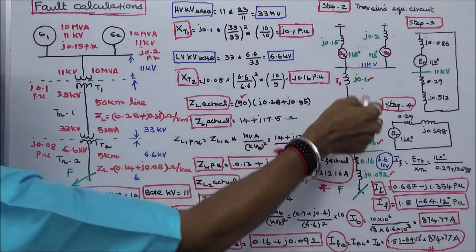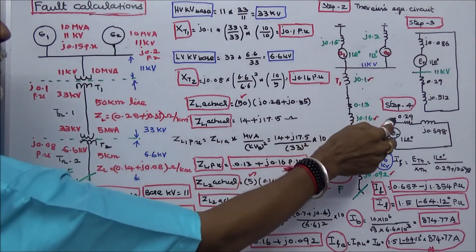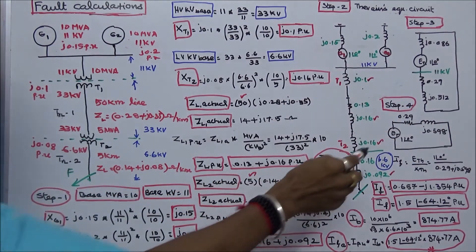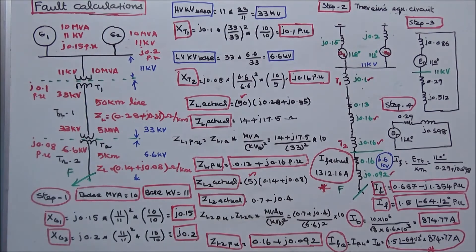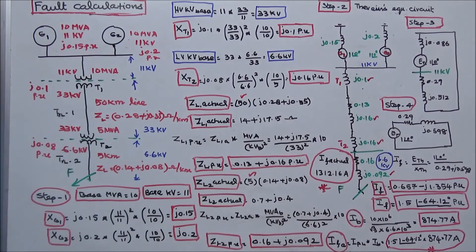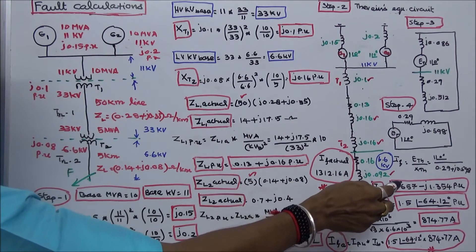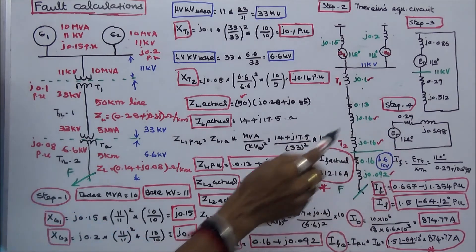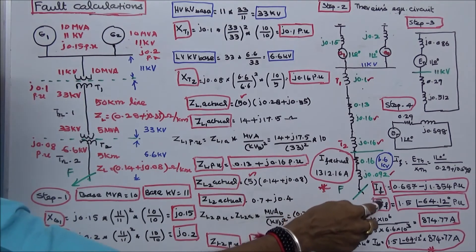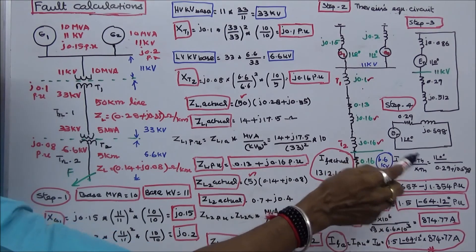In step 4, the simplified network has total resistance 0.29 and reactance j0.598, with Thevenin voltage 1∠0°. The fault current IF = E_th / Z_th = 1∠0° / (0.29 + j0.598). In rectangular form, IF = 0.657 − j1.354 per unit, and in polar form, IF = 1.5∠−64.12° per unit.